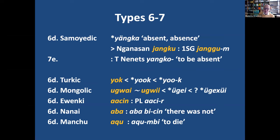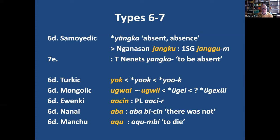Many Ural-Altaic languages use a different strategy: it's very common to have a noun expressing absence. In Samoyedic Nganasan, we have *jangku*, which is really a noun — you can see this from its inflection. You can add a personal suffix which makes it a predicate, like *jangku*, meaning 'I am absent', but it has no verbal element; it's a real noun. In Tundra Nenets, an actual verb has been derived from this stem — a privative verb meaning 'to be absent'. In general, in the eastern realm of Ural-Altaic, these nominal expressions of absence prevail.